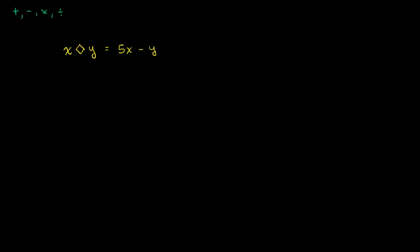So given that definition, what would 7 diamond 11 be? Well, you just go to the definition. 7 diamond 11, instead of an x, we have a 7. So it's going to be 5 times 7 minus, instead of a y, we have an 11. So one way to think about it is, in our definition, every place you saw an x, you can replace with a 7. Every place you saw a y, you replace with 11.